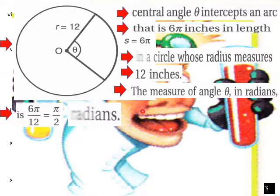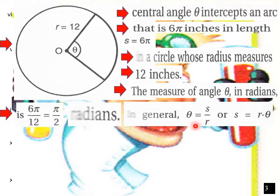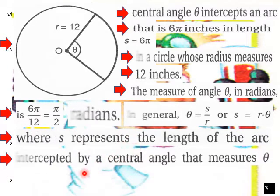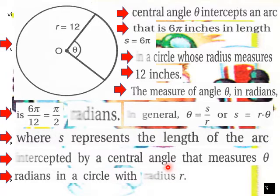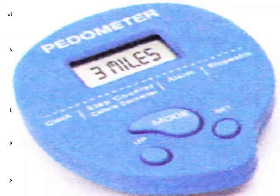The measure of angle theta in radians is 6π over 12, which simplifies to π over 2 radians. In actuality, this equals π over 2 radians because it is the arc length divided by your radius. In general, theta equals S over R, or S equals R times theta, where S represents the length of the arc intercepted by a central angle measuring theta radians in a circle with radius R.